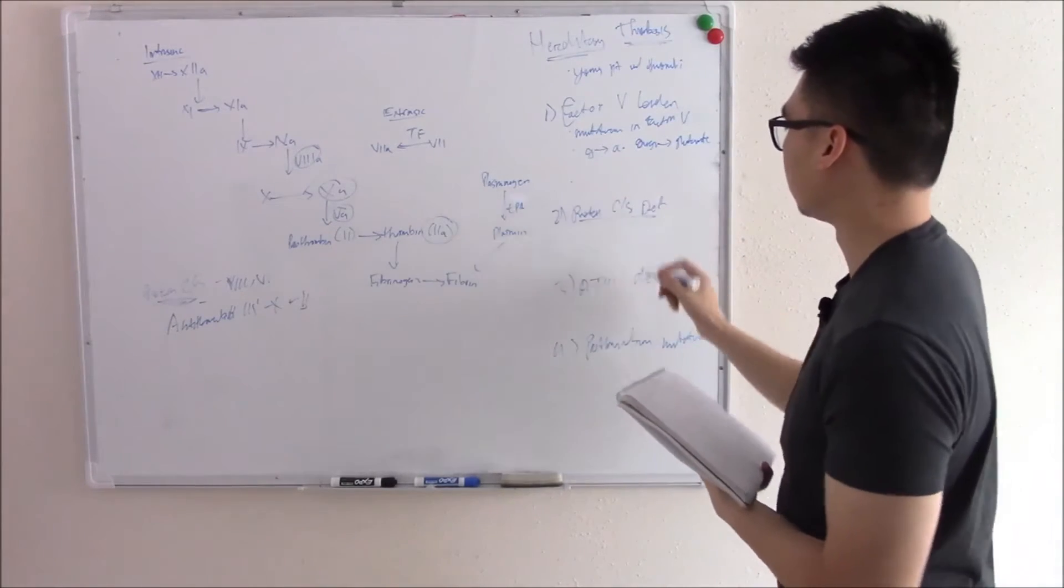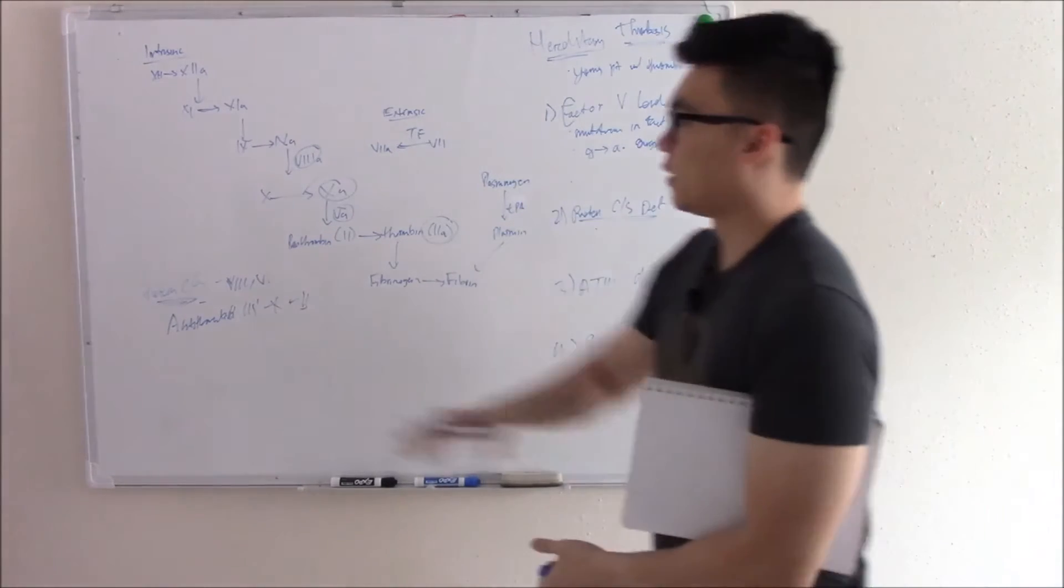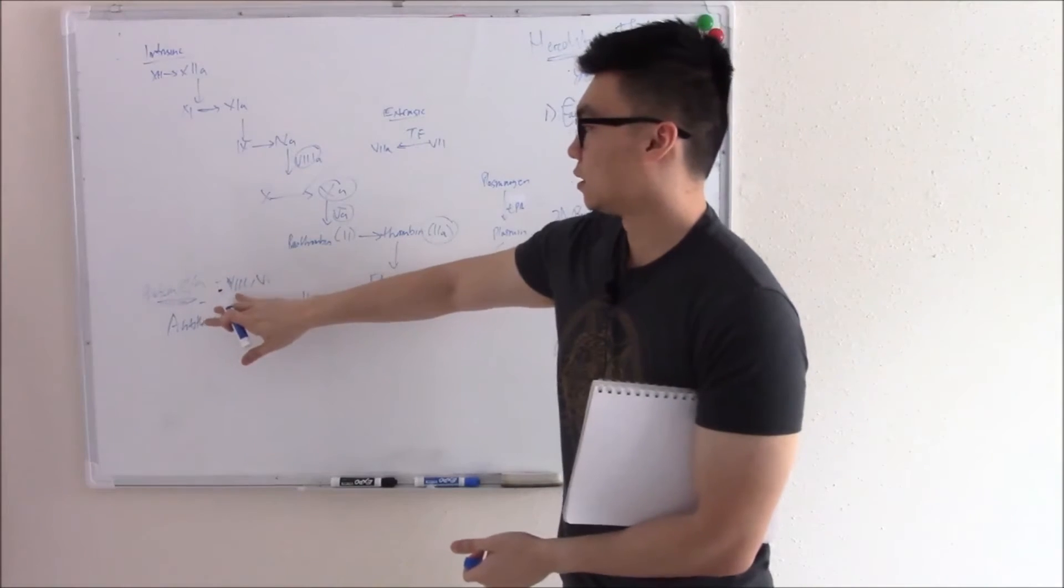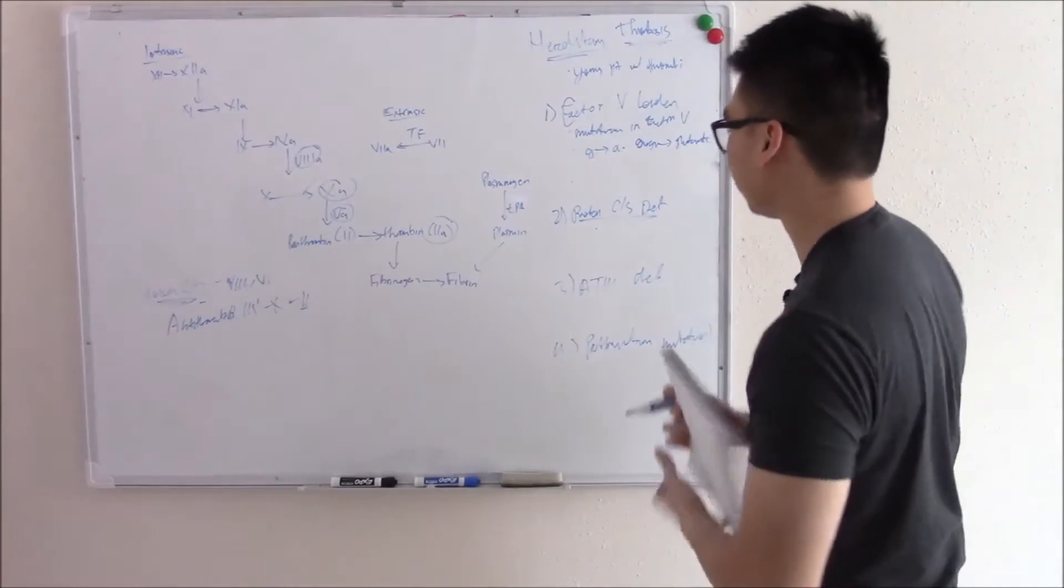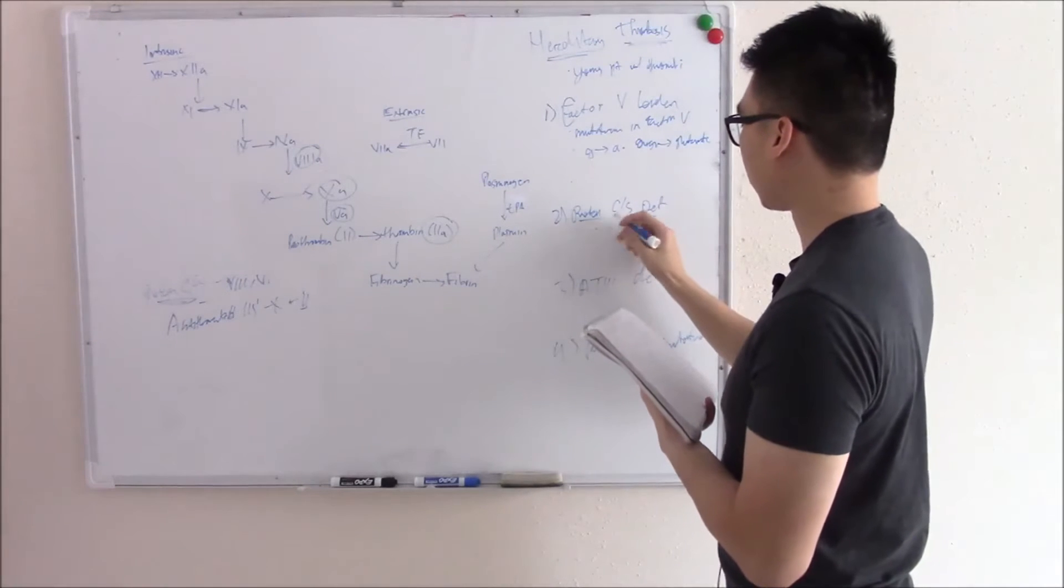Okay. Pretty straightforward there. Protein C and S deficiency. Self-explanatory. If you don't have protein C and S, you can't break down our cofactors 8 and 5. Okay. So 8 and 5 increase.